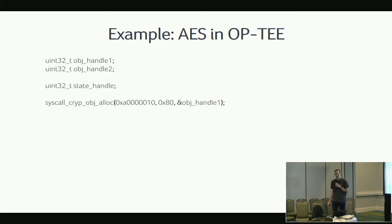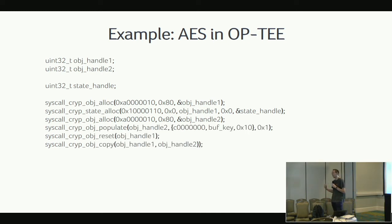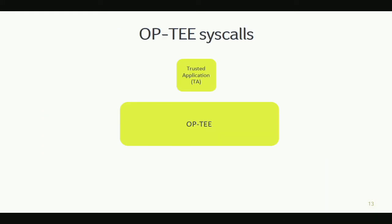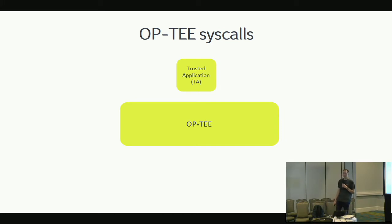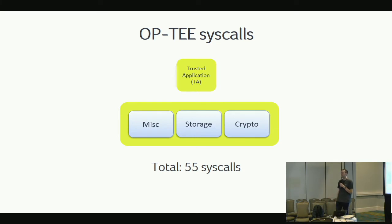When we go deeper, this high-level API is for a major part implemented through system calls in the operating system. The very same AES example drills down to a series of system calls back into the OS: to allocate objects, allocate corresponding state objects, populate the state objects, do initialization of the crypto subsystem, and eventually execute the operation. OP-TEE has roughly 55 system calls total, including random ones like logging, panicking, and cross-TA calls, with two major components being secure storage and cryptographic system calls.